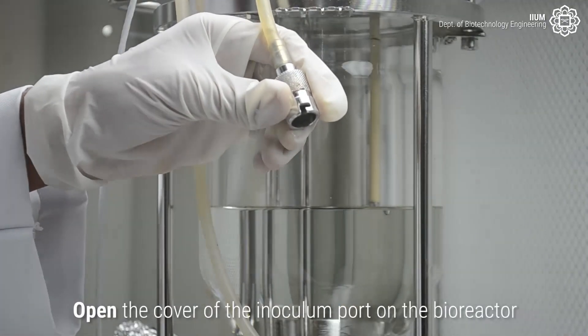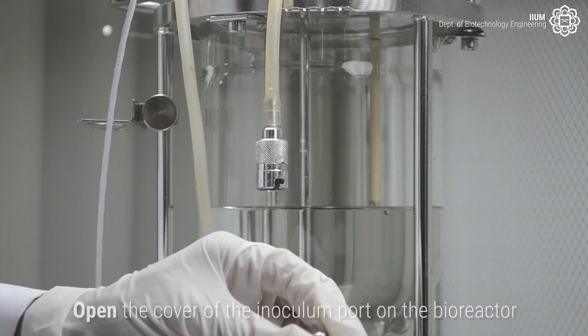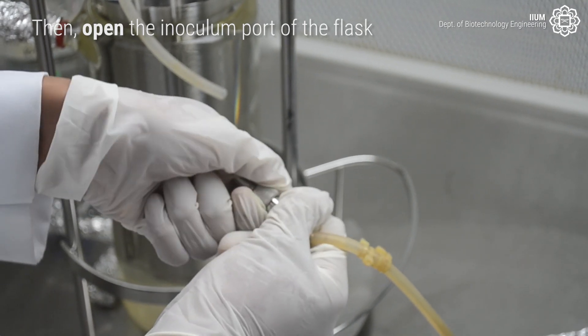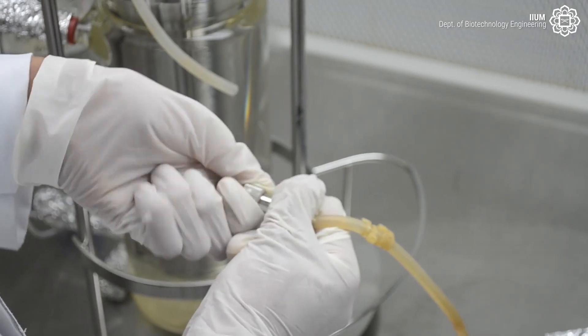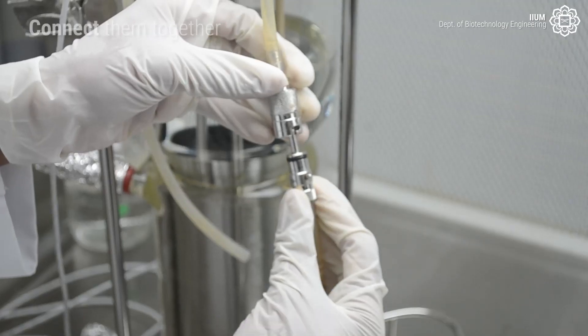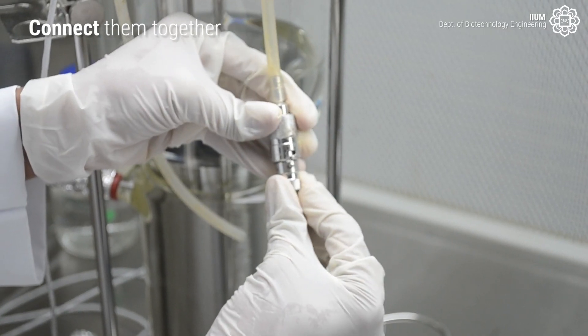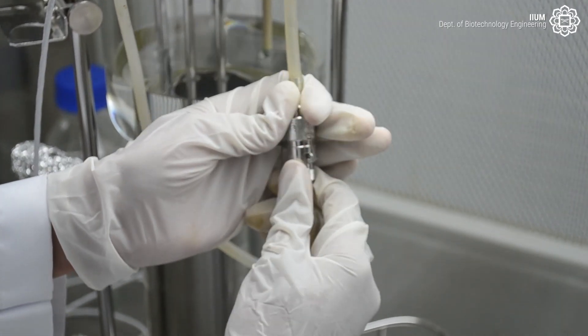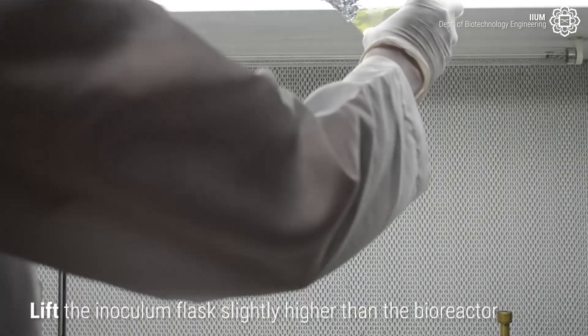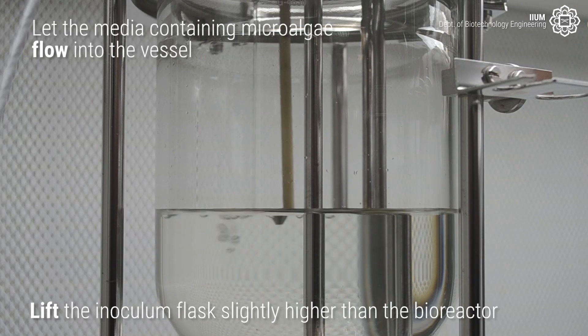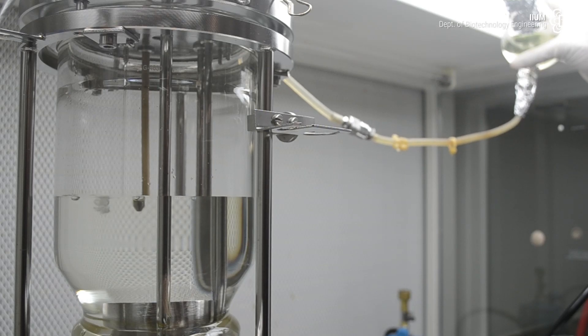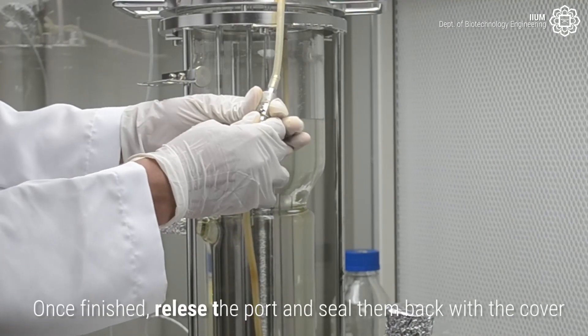Open the cover of the inoculum port on the bioreactor. Then open the port of the flask. Connect them together. Lift the inoculum flask slightly higher than the bioreactor. Let the media containing microalgae flow into the vessel. Once finished, release the port and seal them back with the cover.